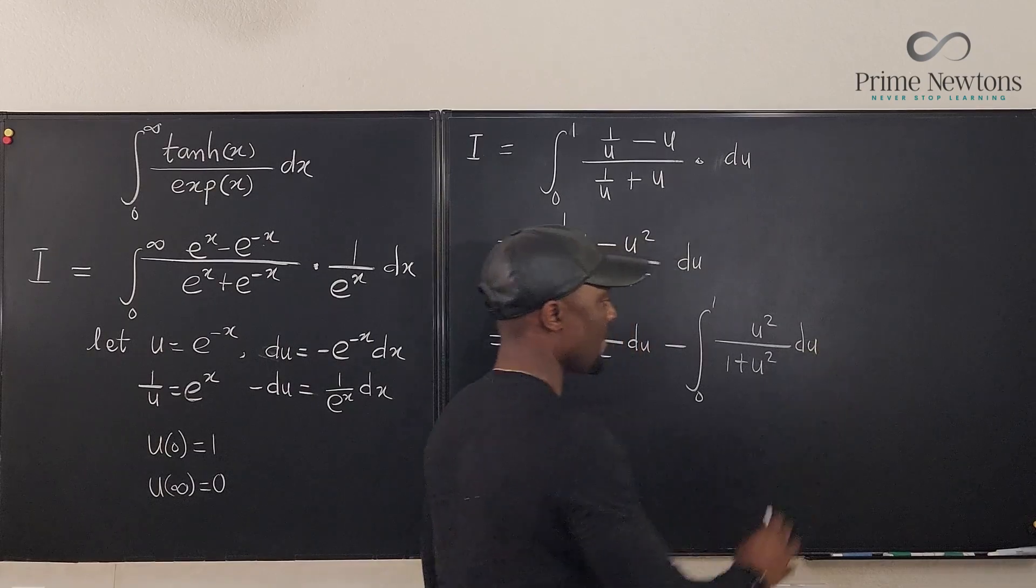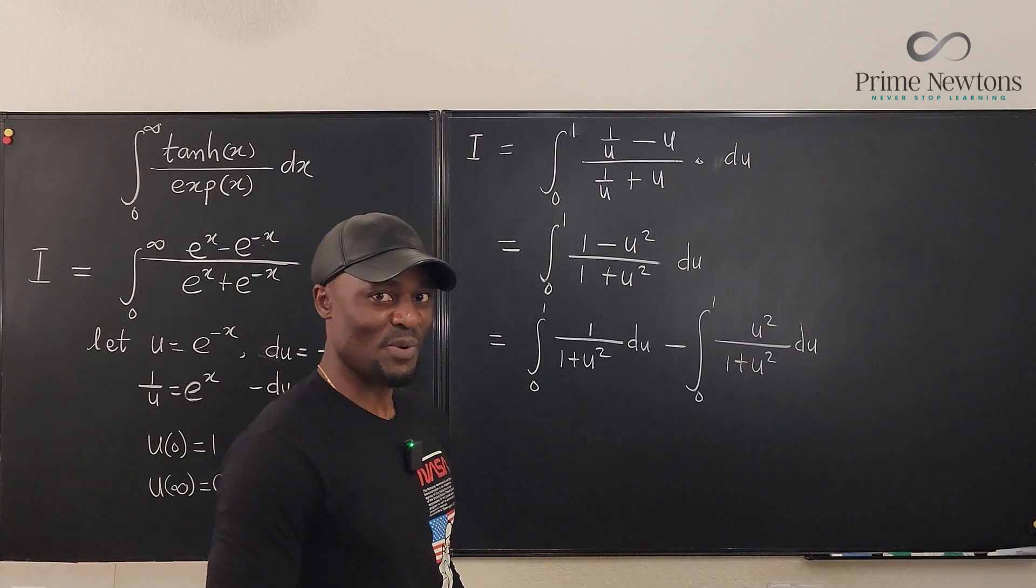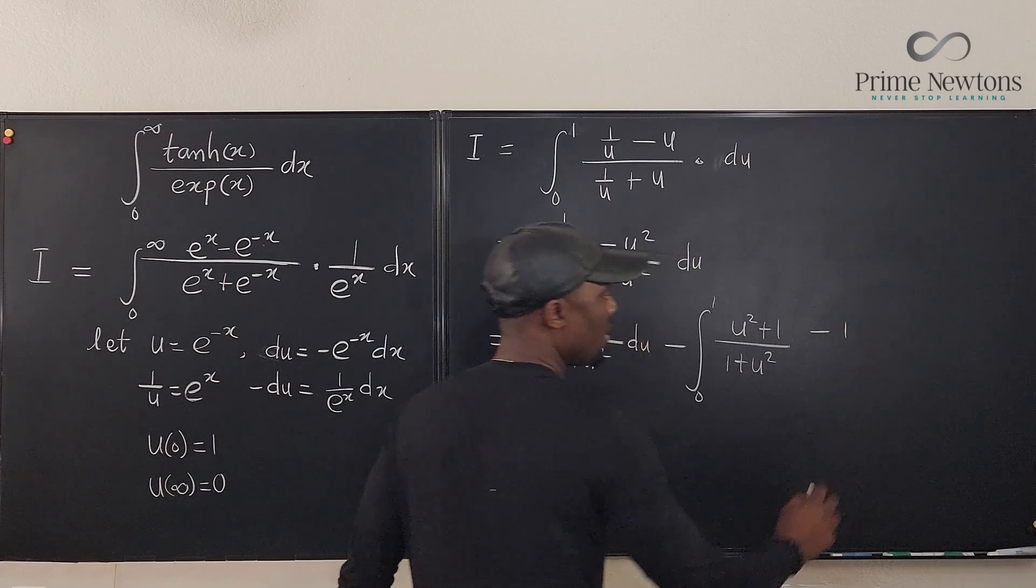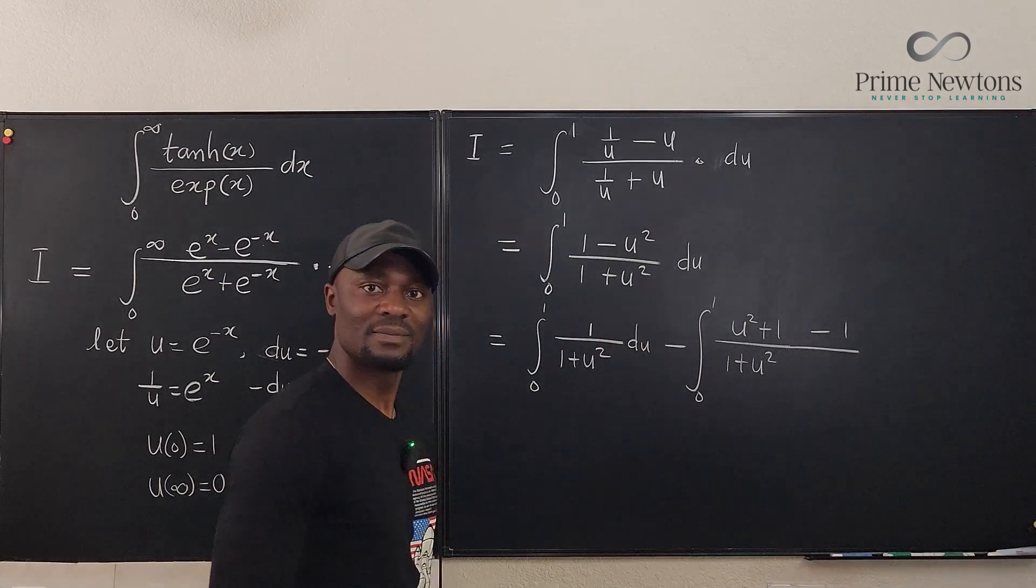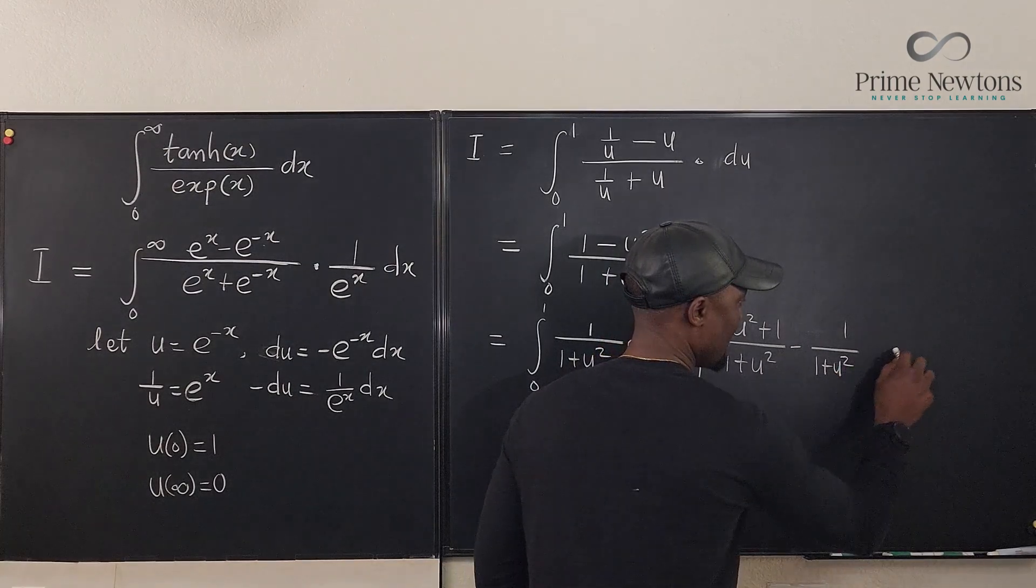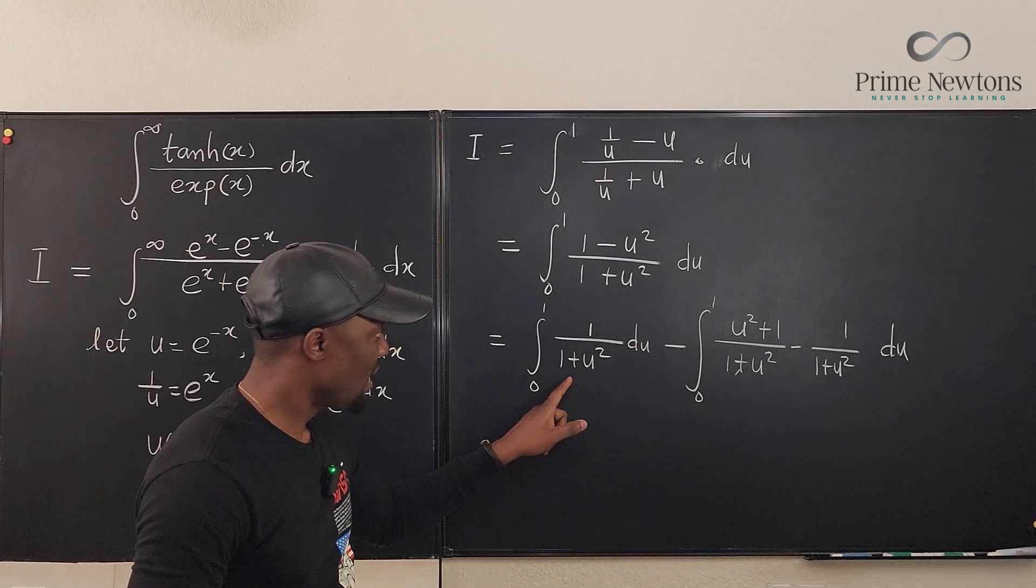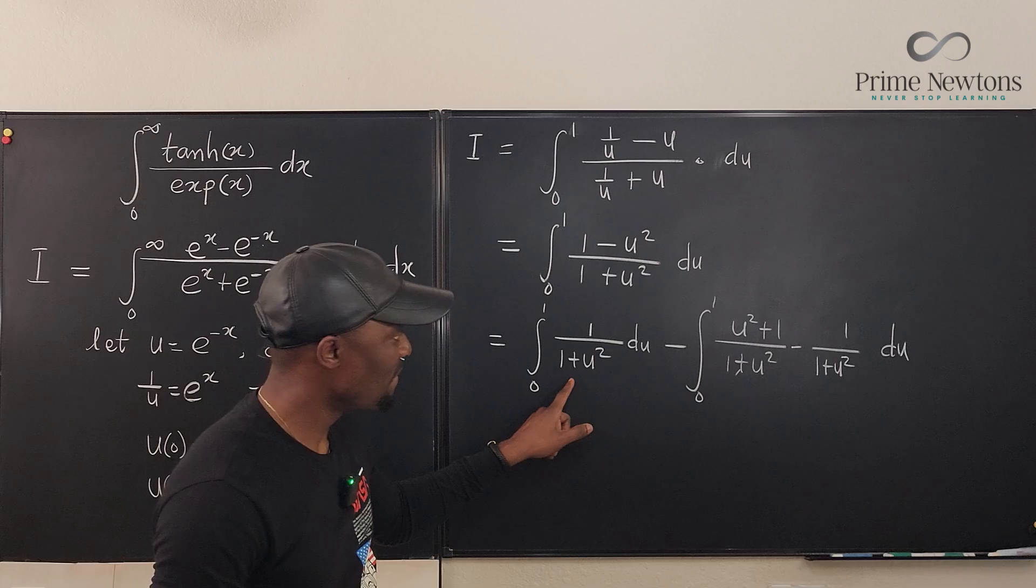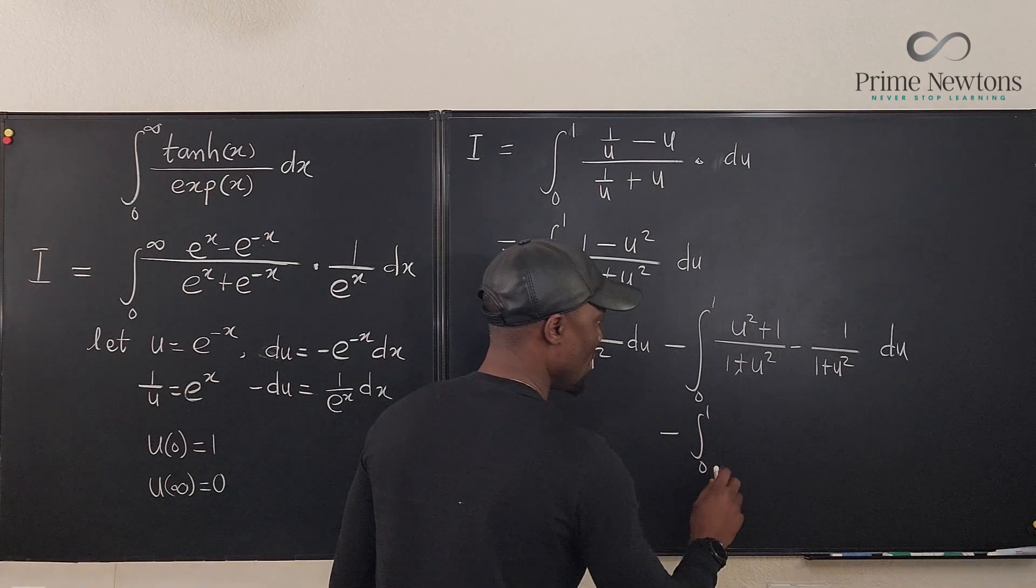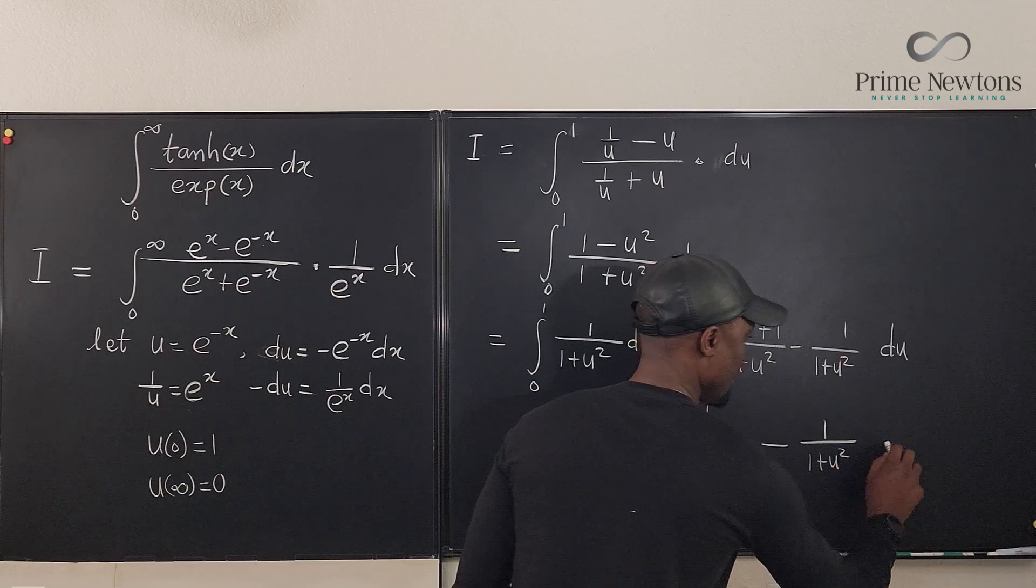But you see, this one can actually be broken down into u squared plus one minus one. I can write this as u squared plus one minus one. And then I can split this in two and make this minus one over one plus u squared du. That's how you integrate this. We're going to take one more step. We are going to rewrite this. If we integrate this, this will cancel this.